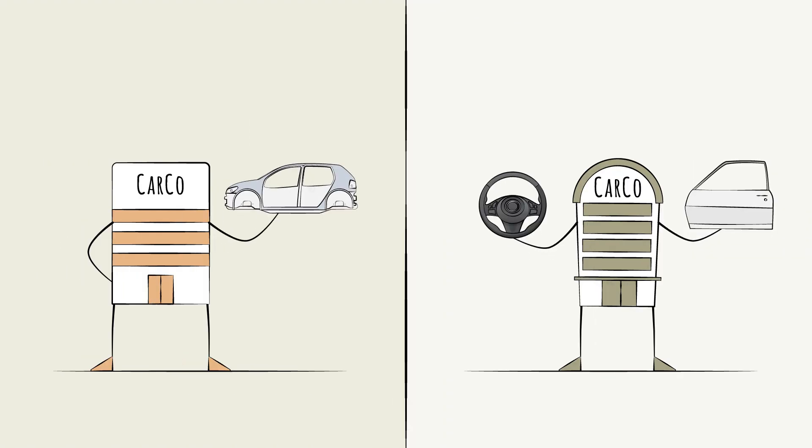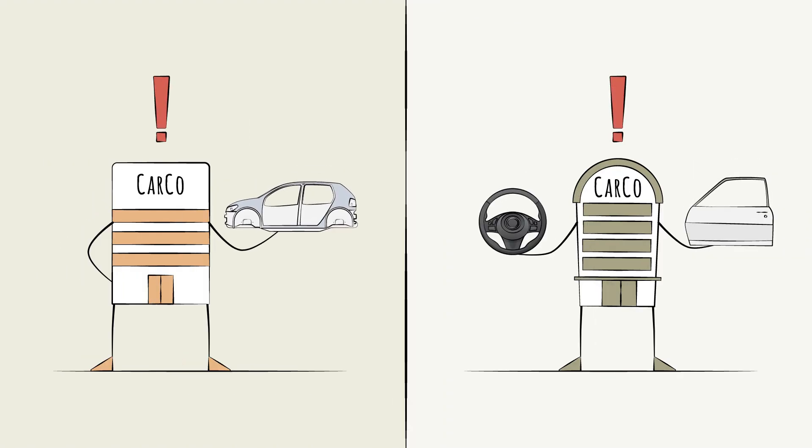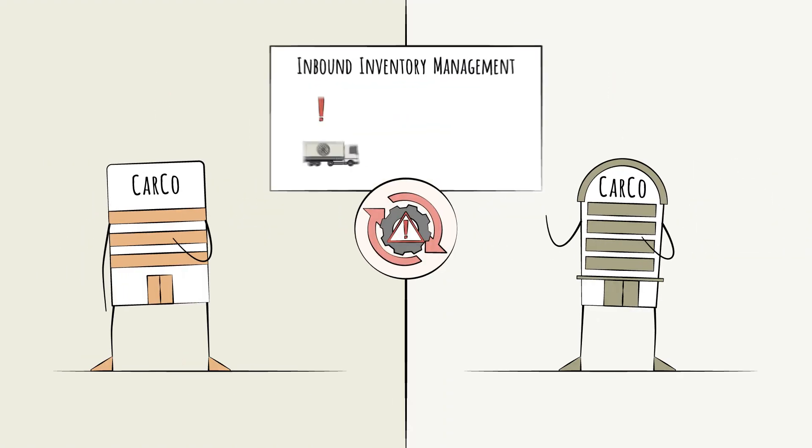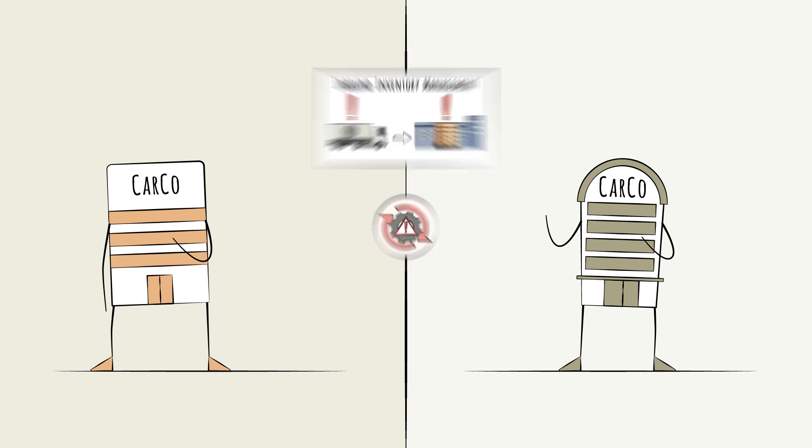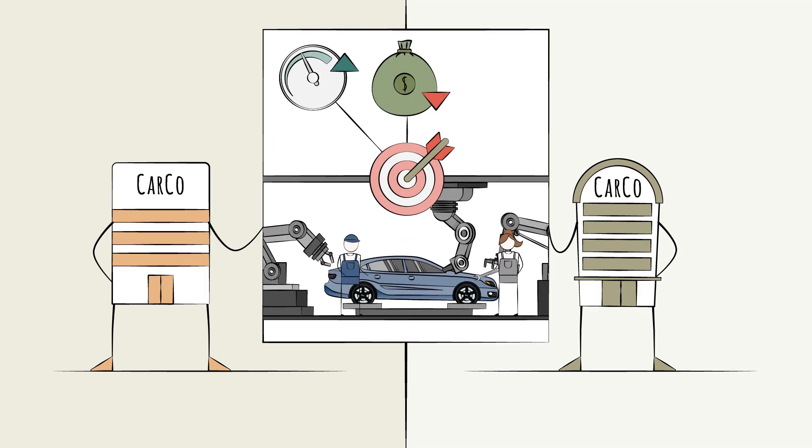Imagine two car manufacturers, both facing the same problem: inefficiencies in their inbound inventory management. Their goal? Produce cars faster and cheaper, with as little on-hand inventory as possible.